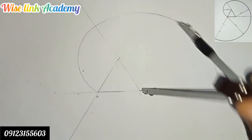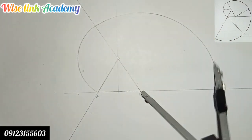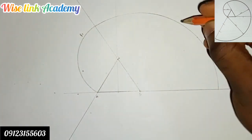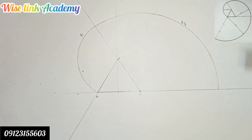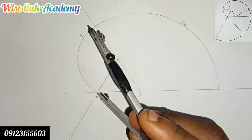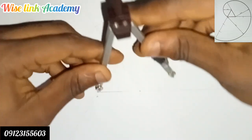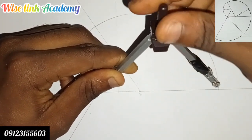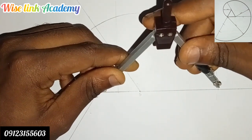I can call this arc R1 and this one R2. Now let's draw R3. I take the compass pin to point A and extend it to point B at R2, and I'll draw my arc.